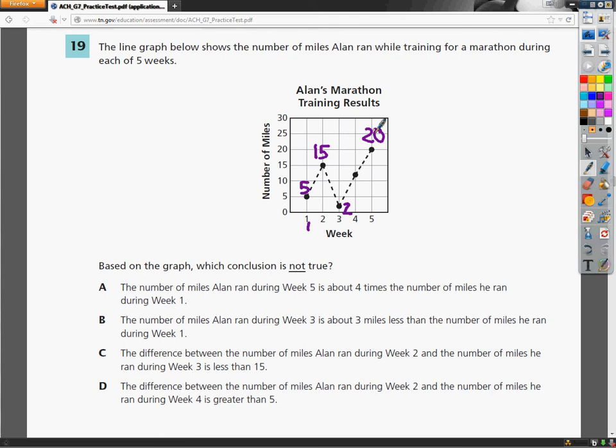A says the number of miles Alan ran during week 5 is about 4 times the number of miles he ran during week 1. So all I need to do is look at week 1, and it's 5. So I do 5 times 4, which is 20. And in week 5, he was going 20. So I think A is a reasonable answer. And since we're looking for one that's not true, I'm going to mark out A because it is true.